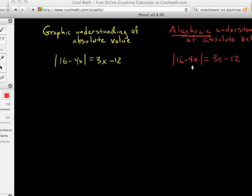If we have the absolute value of 16 minus 4x is equal to 3x minus 12, and, oops, no, sorry, summer packet says, let's say 3x, it says 4x, sorry. So, we have absolute value of 16 minus 4x is equal to 4x minus 12.